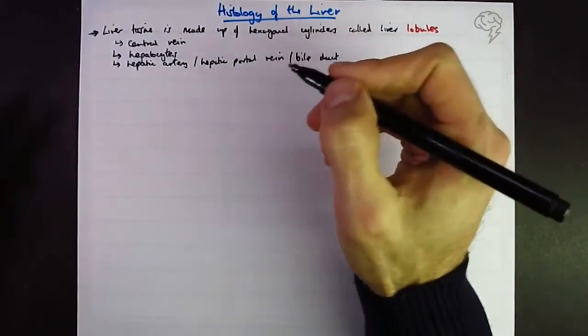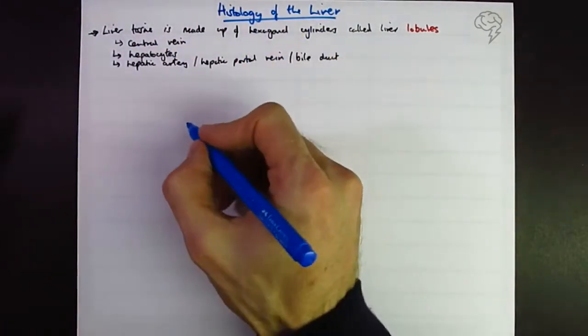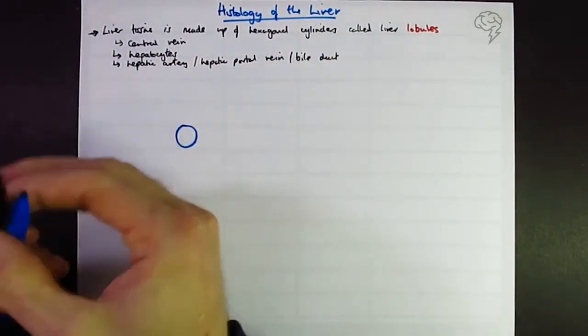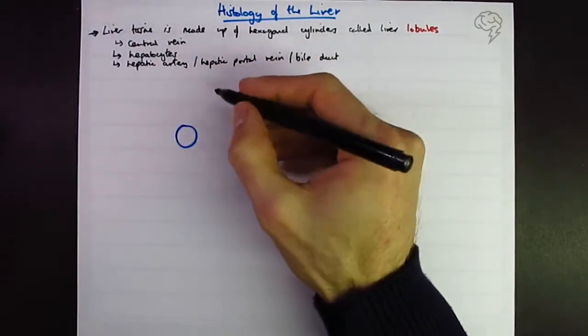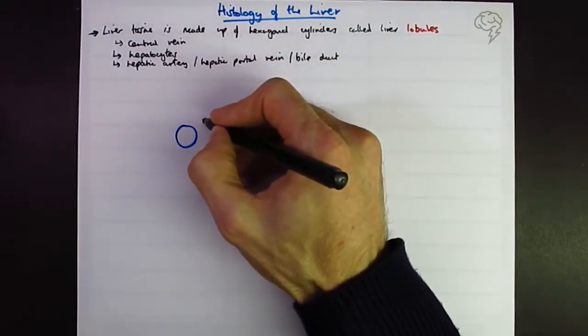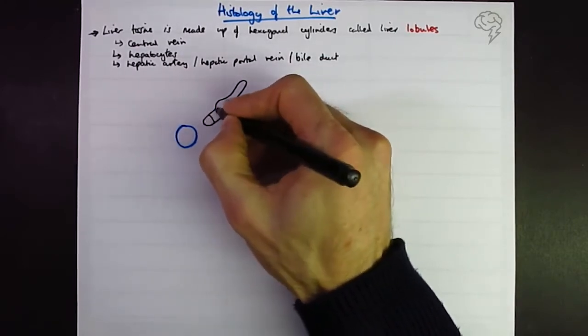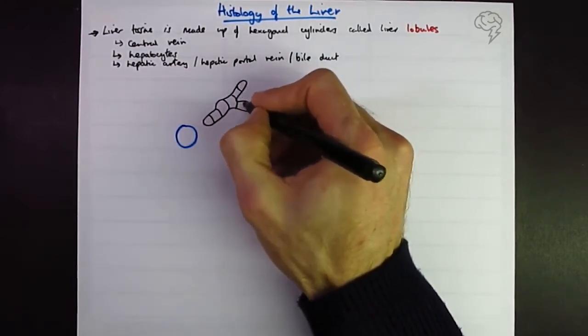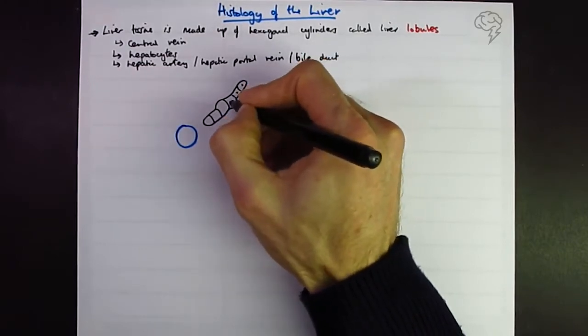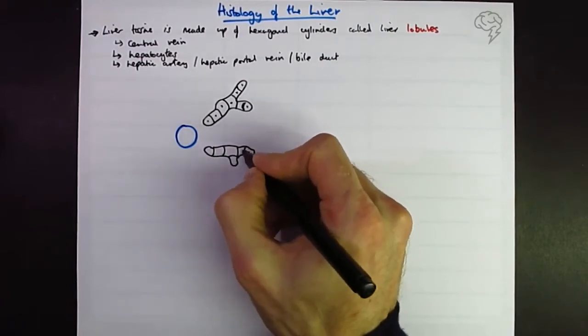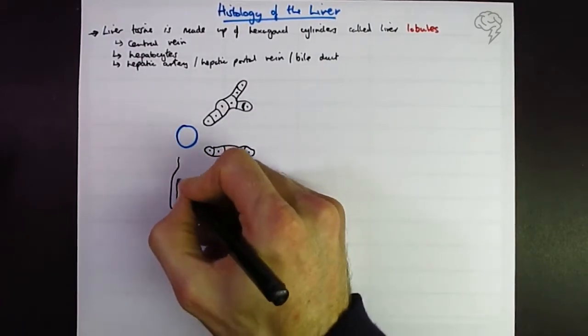I'm going to start with the central vein in the middle - everything kind of drains into that. The hepatocytes are the things I'm drawing with cells with nuclei. It's going to be roughly hexagonal, they can be branched like this, and these are all going to have nuclei.